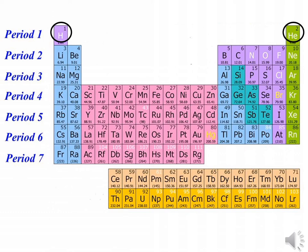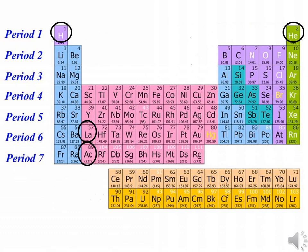In contrast, periods 6 and 7 are so long that many of their elements starting with lanthanum in period 6 and actinium in period 7.